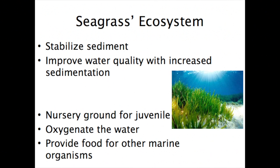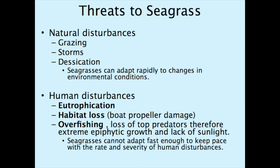Seagrasses are important because they stabilize the sediment, improve water quality with increased sedimentation, provide a nursery ground for juvenile fish, oxygenate the water, and provide food for other marine organisms. Threats to seagrasses include natural disturbances like grazing, storms, and desiccation, as well as human disturbances we can prevent: eutrophication — too much phytoplankton in an ecosystem — habitat loss from boats, overfishing or loss of top predators, and therefore extreme epiphytic growth and lack of sunlight.